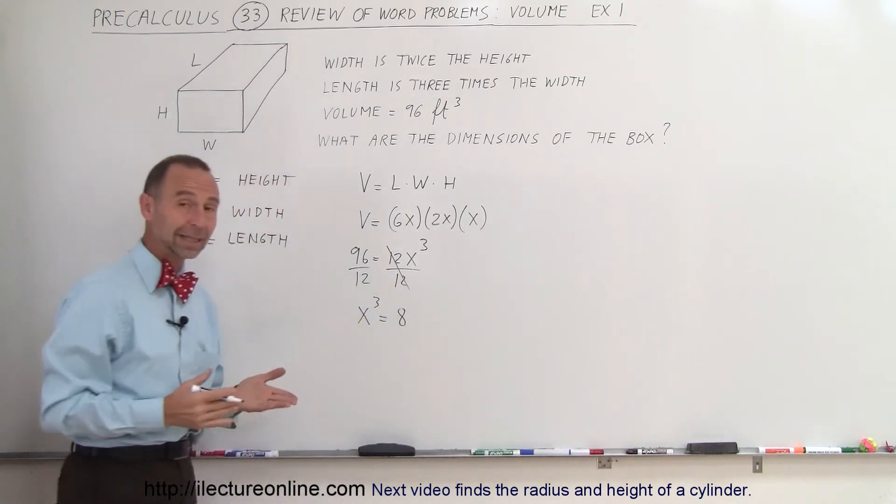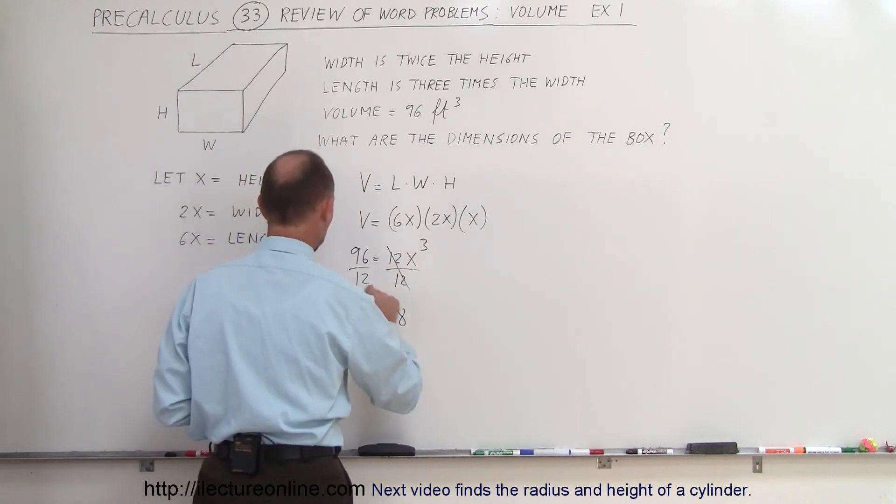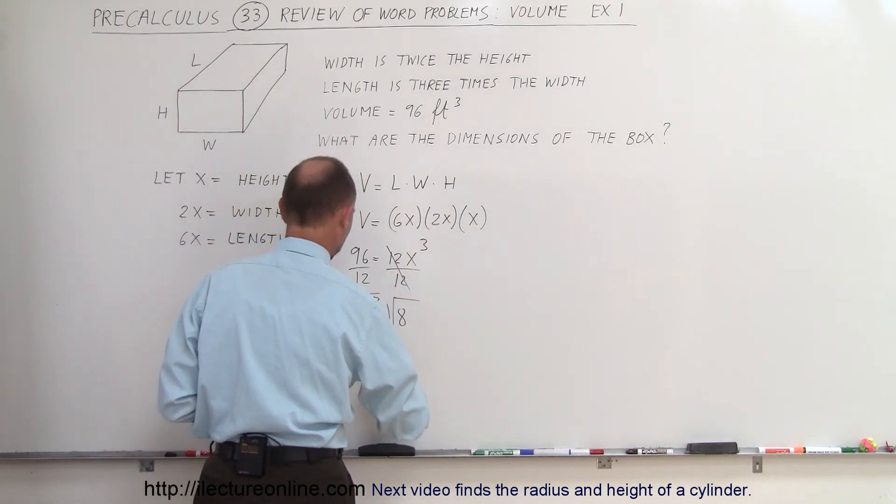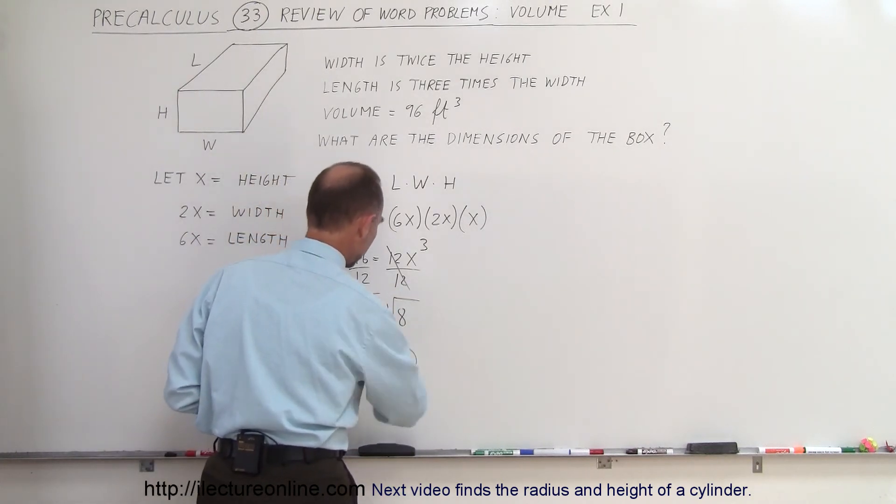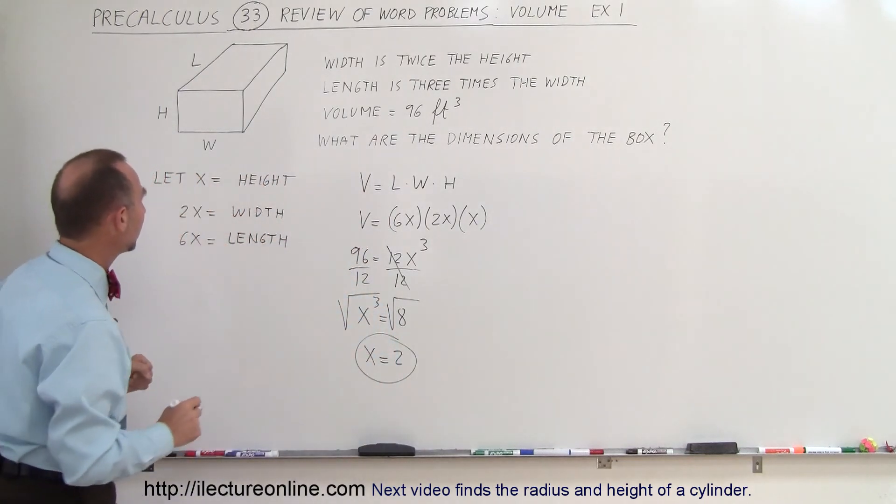And then, of course, at this point, we take the cube root of both sides, and so if we take the cube root of this and the cube root of that, that means that x must equal 2, and since x is equal to 2, we can come back up here.